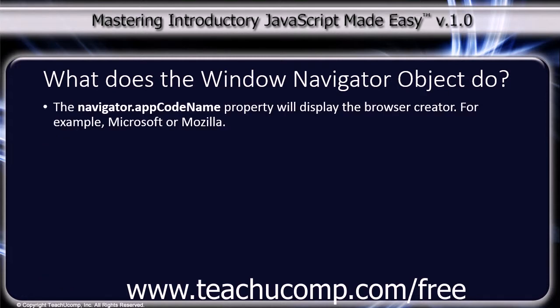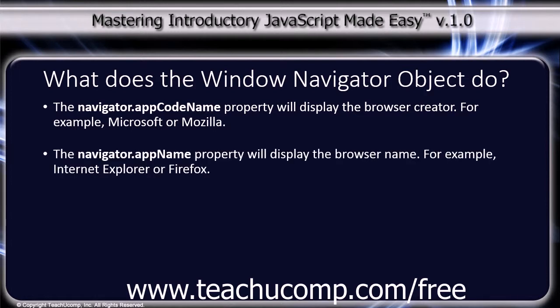The navigator.appCodeName property will display the browser creator — for example, Microsoft or Mozilla. The navigator.appName property will display the browser name — for example, Internet Explorer or Firefox.